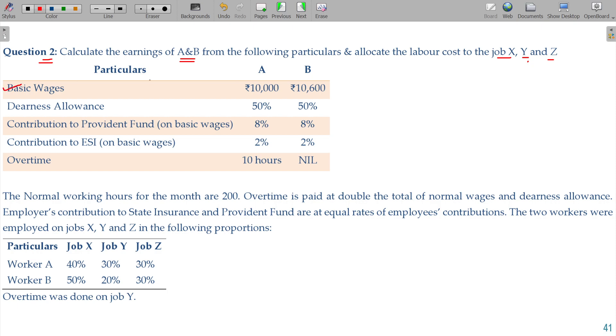We have been given the basic wages. A and B. I am going to calculate only the CTC here. Basic wages. A gets 10,000. B gets 10,600. I just stand corrected. It's 16,000. This is 16,000.